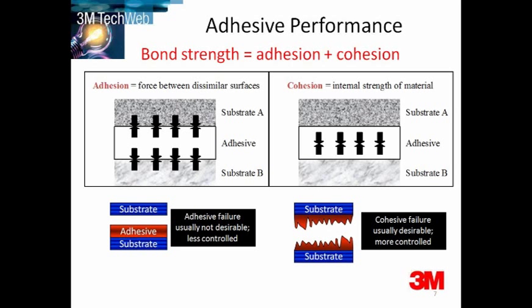If your adhesion force is always greater than the cohesive force in a bonded joint, then one can design to the cohesive strength of the adhesive. This is an important design parameter, especially for structural joints. Cohesion failure is usually more controlled and more desirable, and as I've just stated, can be designed for. We design for no failure, but in extreme conditions — overloading, for example — if you do achieve cohesive failure, it is more predictable.